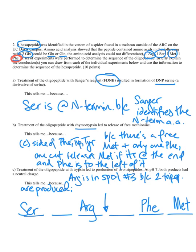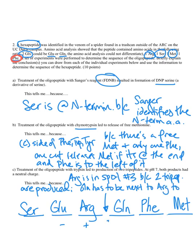That's not the end of this clue. At pH 7, both products had a neutral charge. At pH 7, arginine has an R group with a positive charge. If both peptides had neutral charges, then there must be a glutamate next to arginine to cancel out that positive charge, leaving glutamine in the last position. So glutamate has to be next to arginine to cancel out the charge.